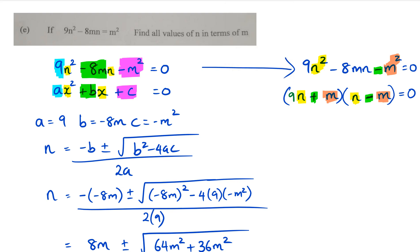The reason I know it's nine is because if I do 9n times n I will get 9n². But the key thing is looking for that inside term - the inside term is minus 8mn. So if I do 9n times minus m I'm going to get negative 9mn, plus these two things here which is mn, which equals 8mn. So that's how I know this formula is correct.